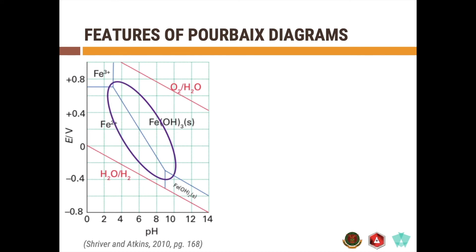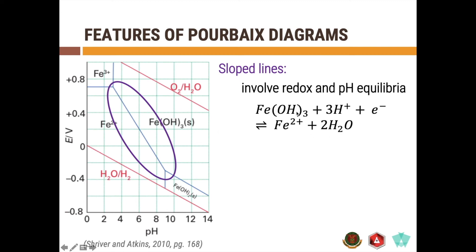That would be your sloped line. For this example, you have the Fe2+ on the left, and on the right, you have your ferric hydroxide. You have the reaction Fe(OH)3 plus 3H+ plus electron giving you Fe2+ plus 2 moles of water. It can be seen from this reaction that it is a redox reaction since you have the transformation of Fe3+ to Fe2+. And the reaction requires protons, which makes it a pH-dependent reaction. And the slope of this line can actually be calculated, again, using the Nernst equation.